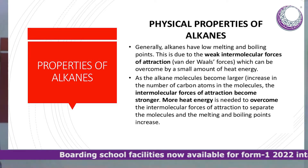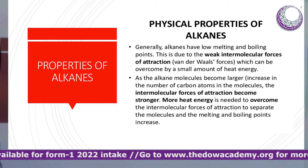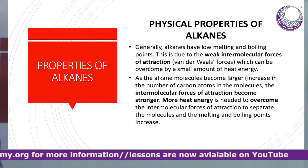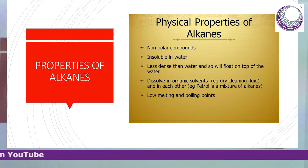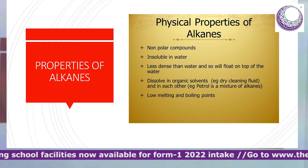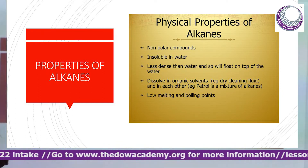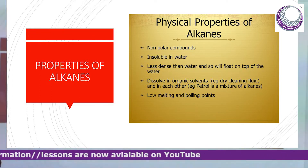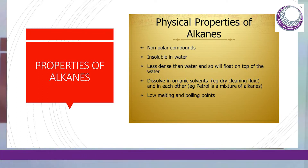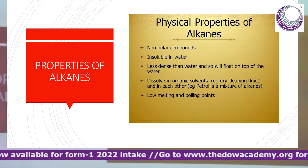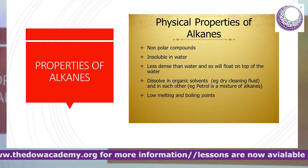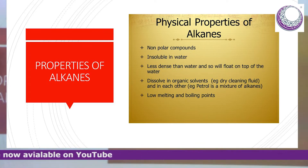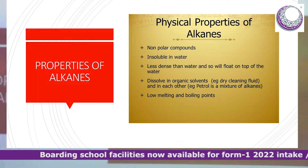In summary: the shorter the alkane, the lower its boiling and melting point; the longer the alkane, the higher the boiling and melting point. For example, hexane has a higher melting and boiling point than methane because hexane has six carbon atoms while methane has only one. Take note: the boiling and melting points of alkanes increase with the number of carbon atoms.